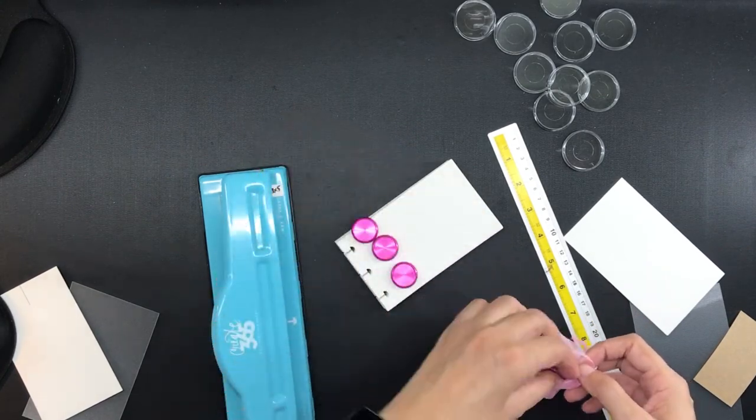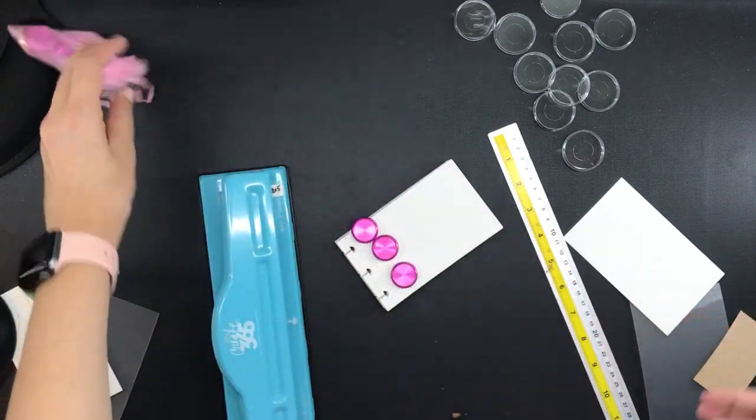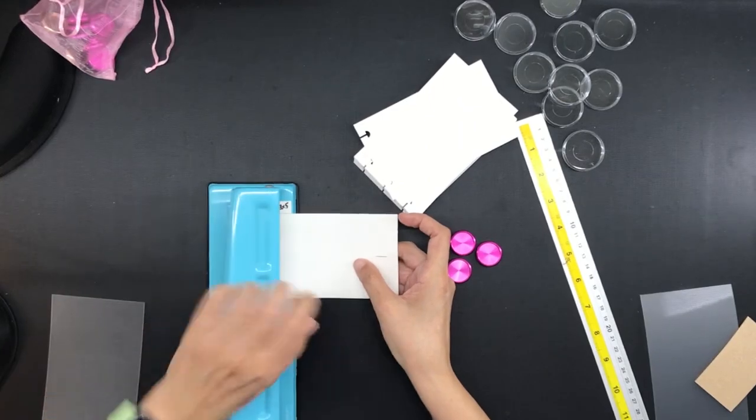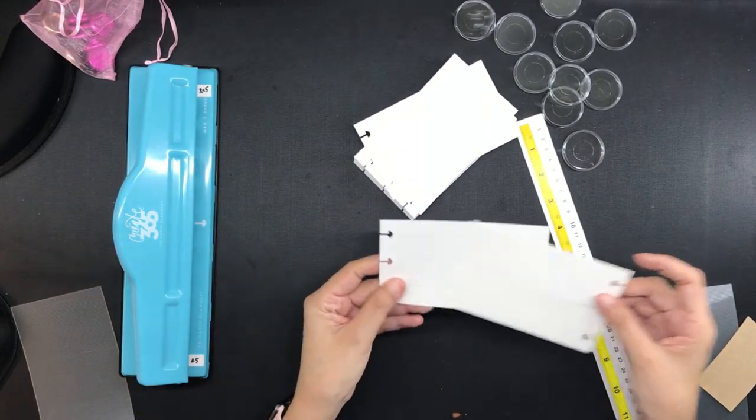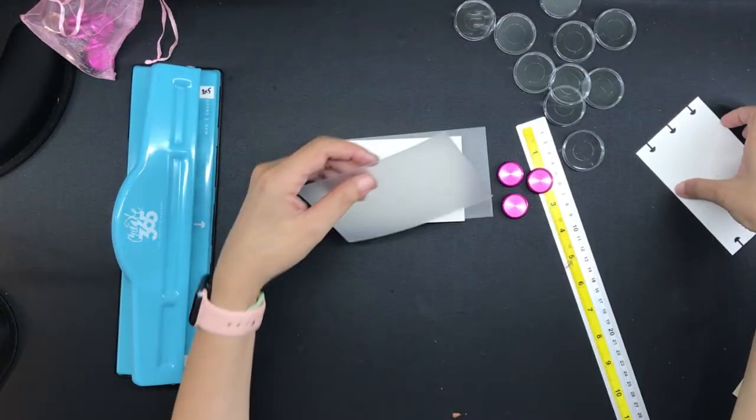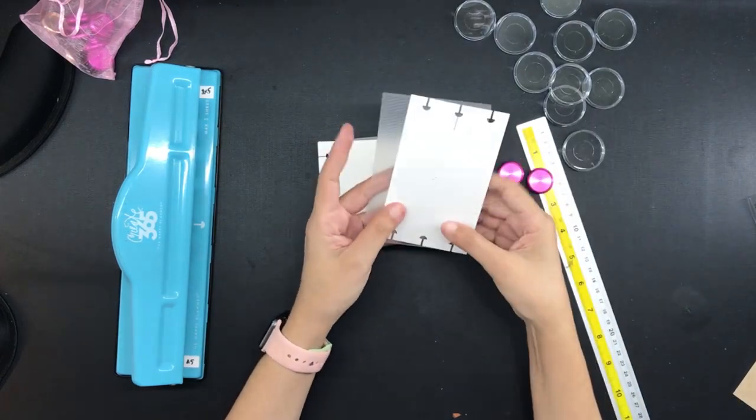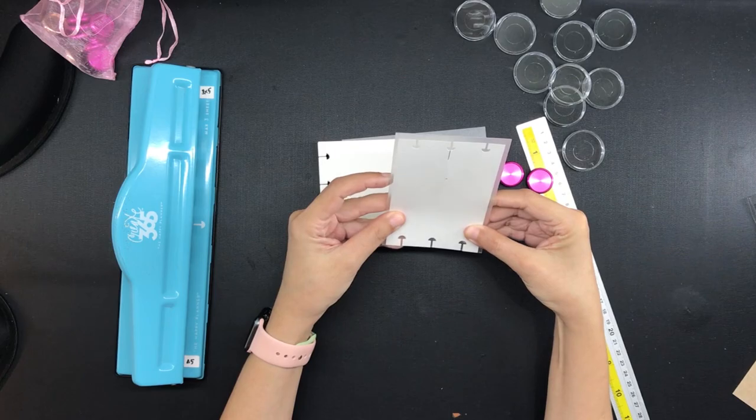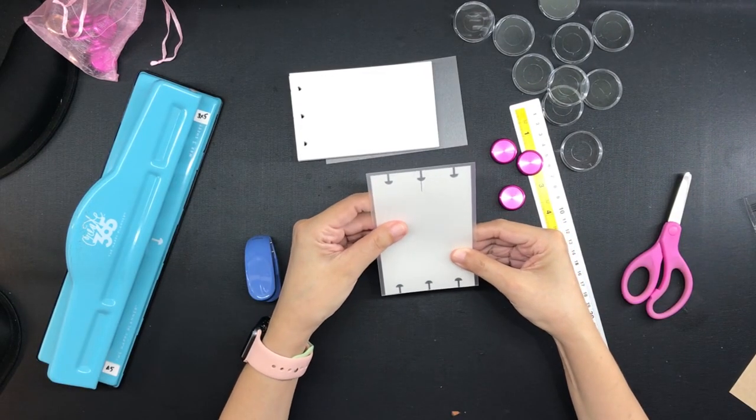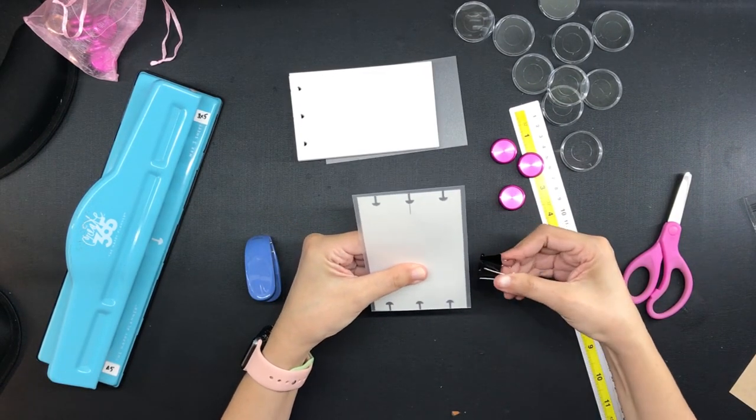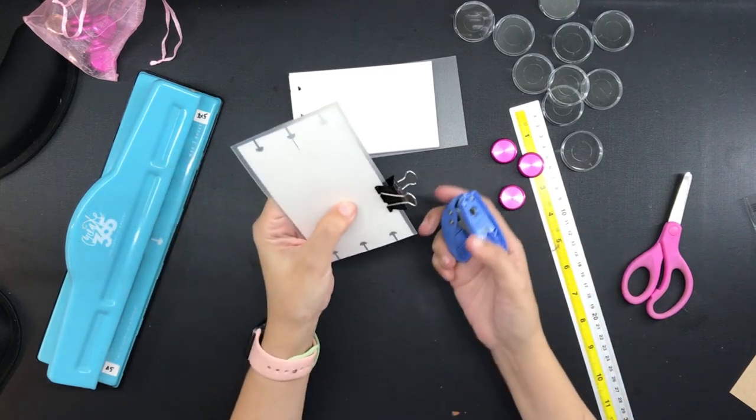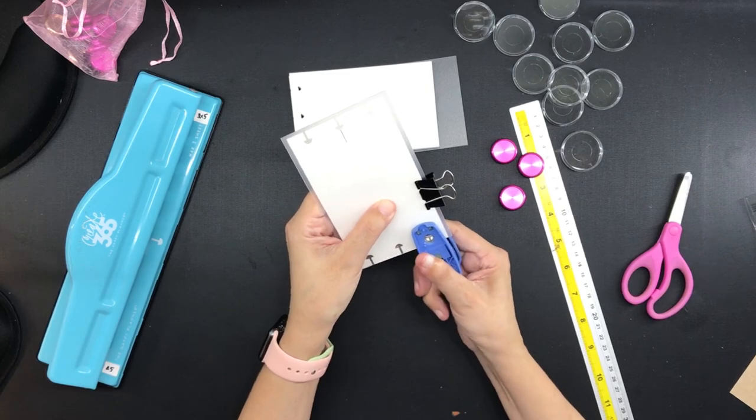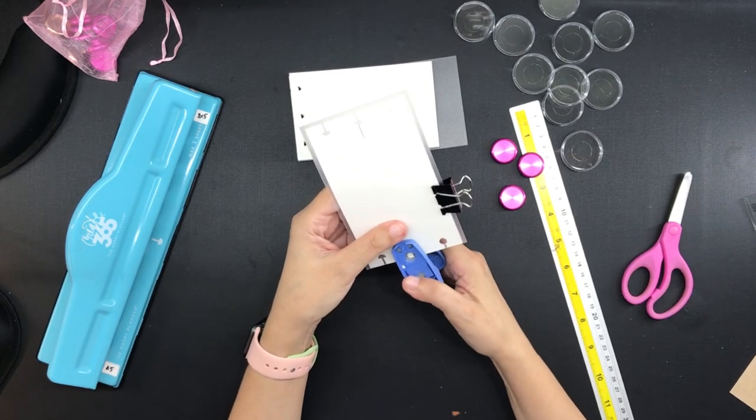So okay now I need to hole punch the plastic covers that I just cut down to size earlier and to do that I need to make a hole punching template which is just one index card hole punched onto opposite edges and then I just line it up, line up the template with the plastic cover, hold the two together using a binder clip so that they will not slip and then make the holes using a single hole punch and a pair of scissors.